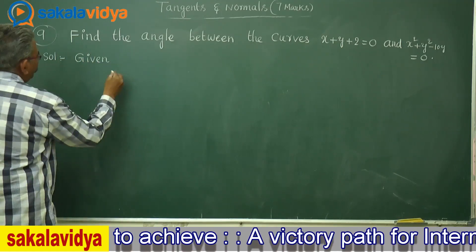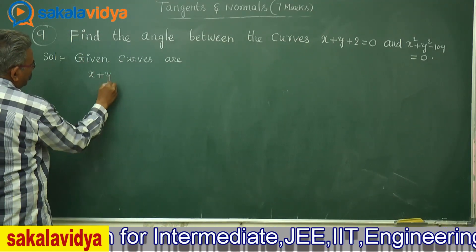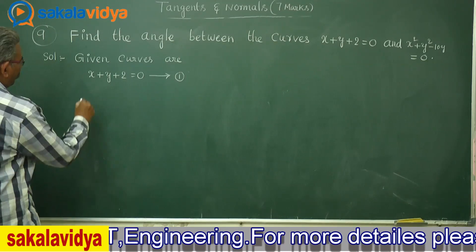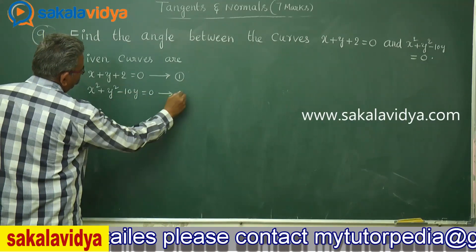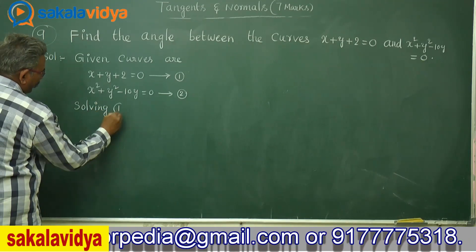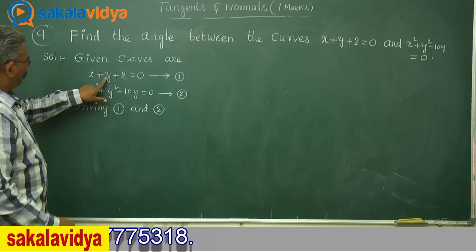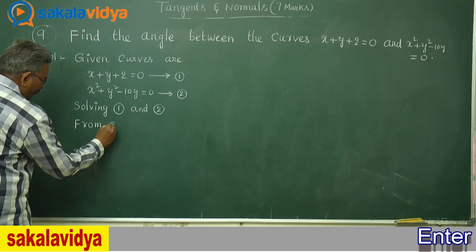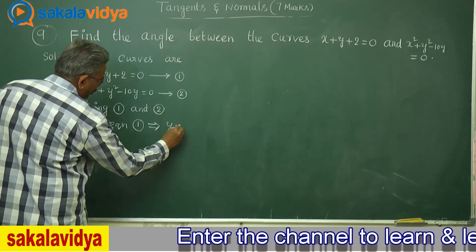The given curves are: equation 1, x plus y plus 2 is equal to 0; and equation 2, x square plus y square minus 10 times y equals to 0. Solving equations 1 and 2, from equation 1 we get y is equal to minus x minus 2, or we can write it as minus of x plus 2.